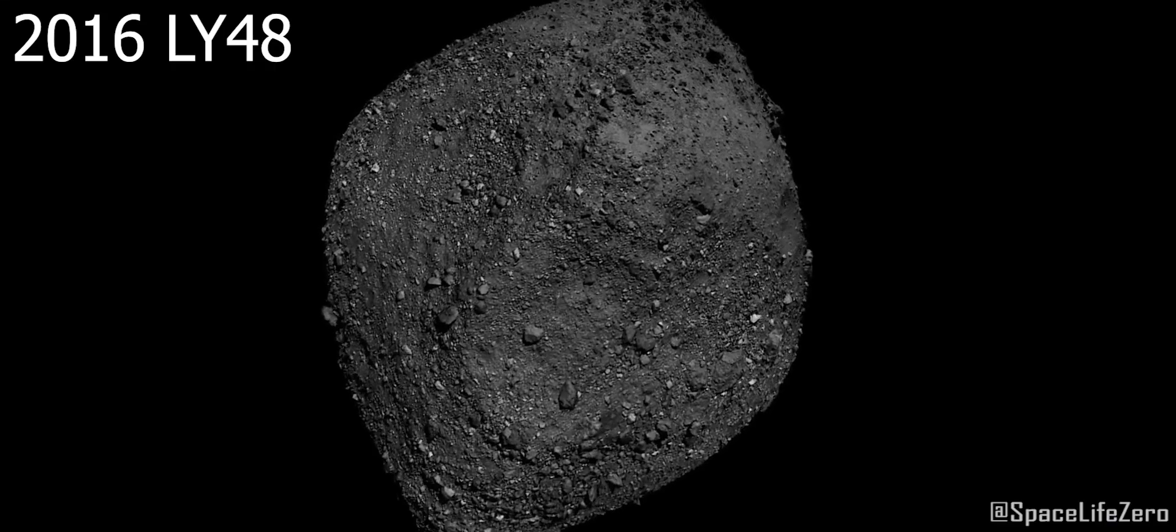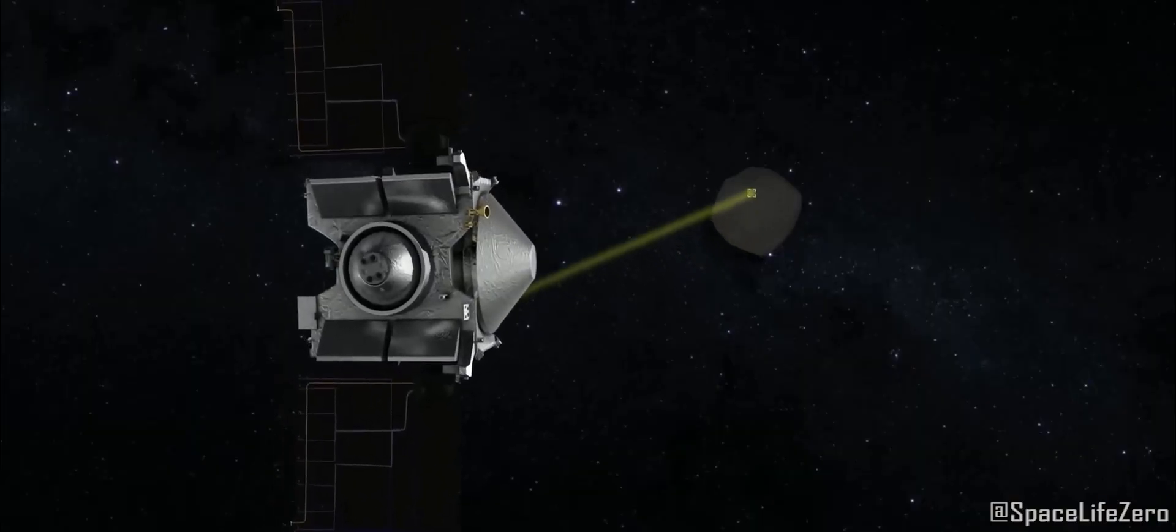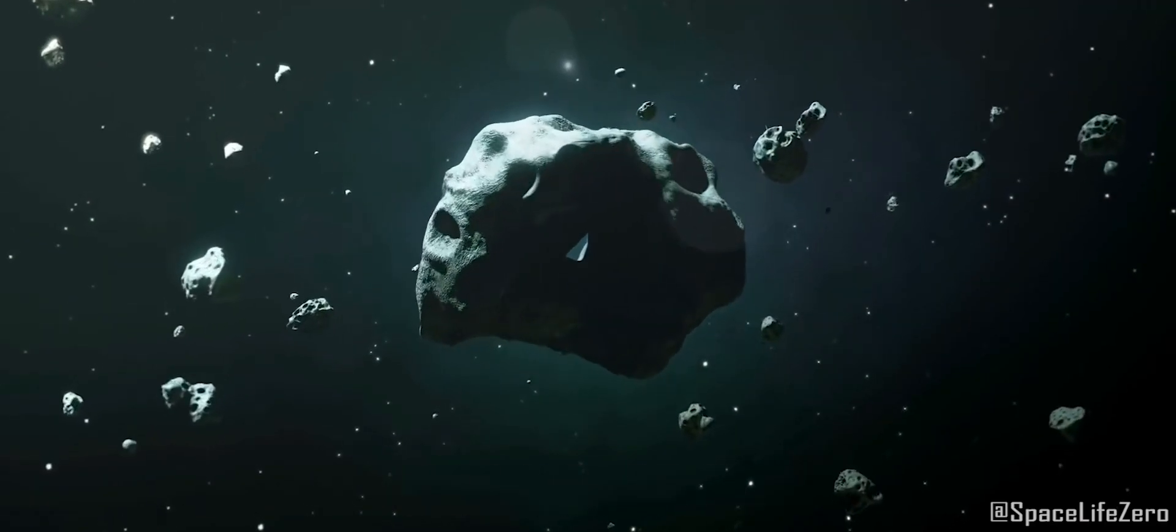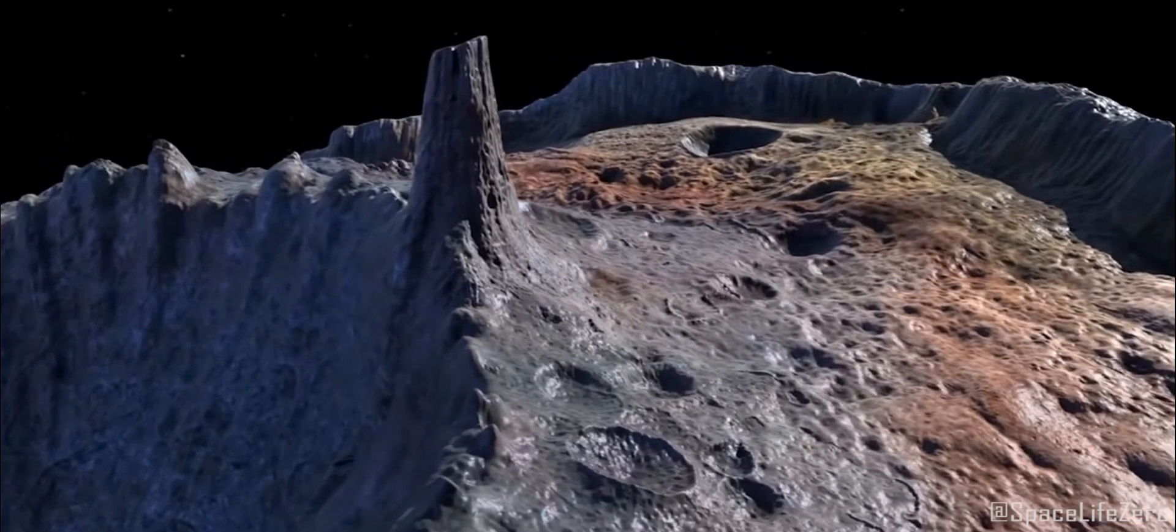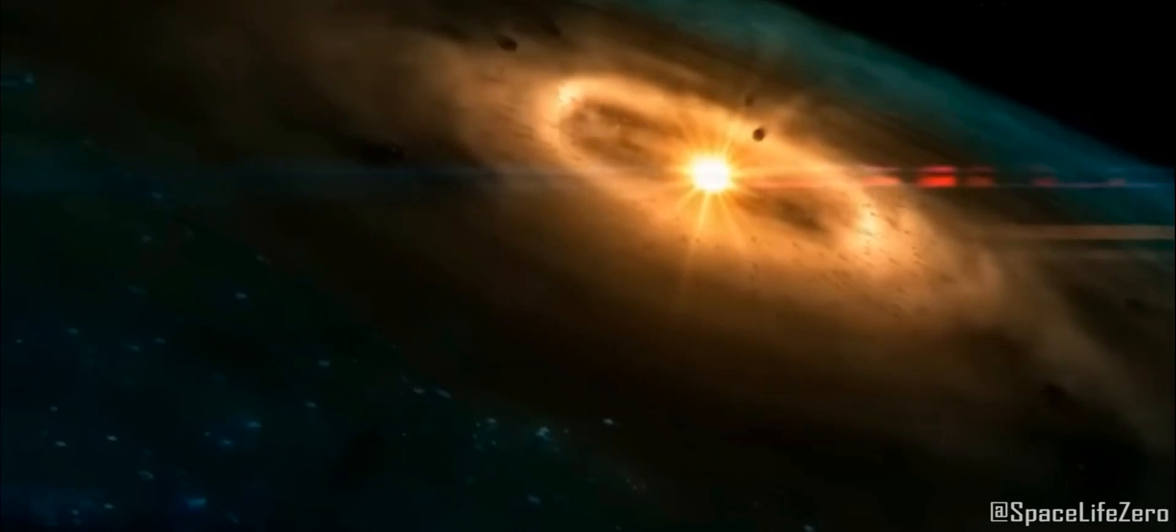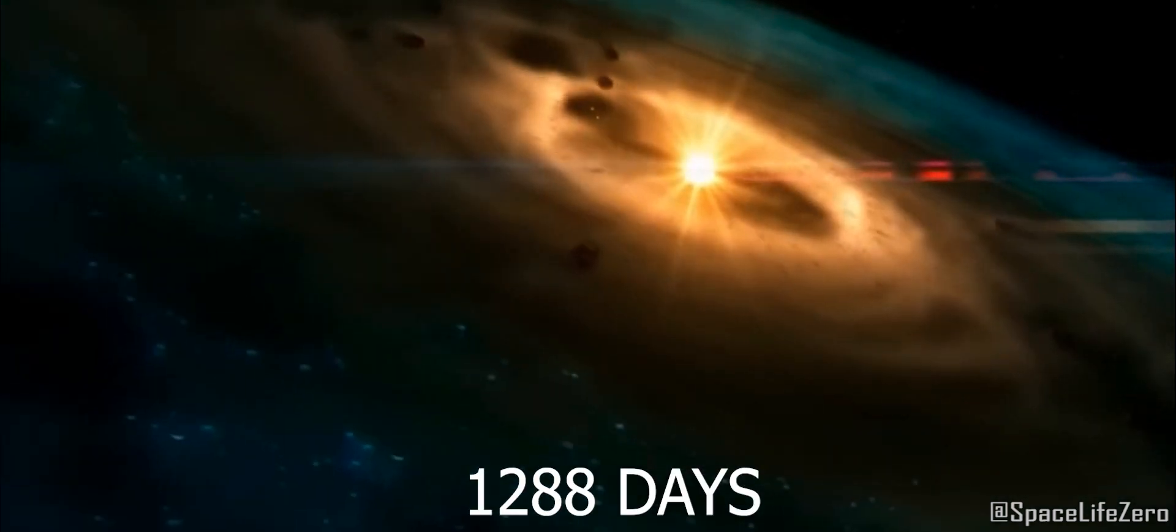Asteroid 2016-LY-48 was discovered on June 11, 2016, and it belongs to the Apollo Group. This space rock has an average estimated diameter of 99.21 meters and makes one orbit around the Sun in 1,288 days.